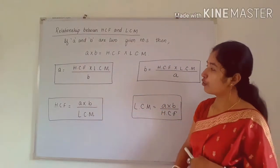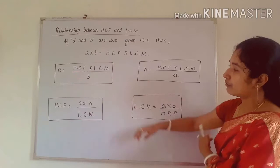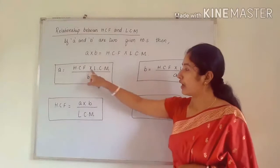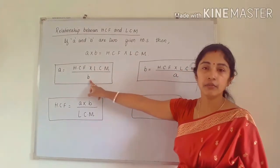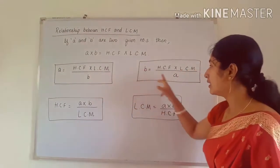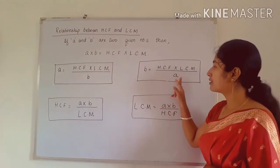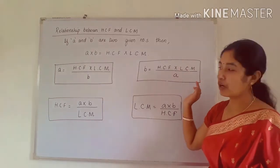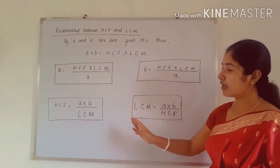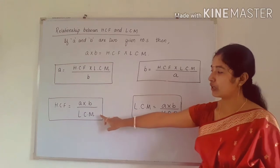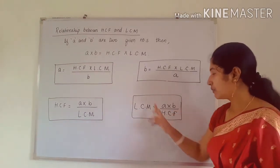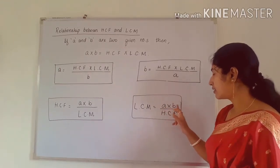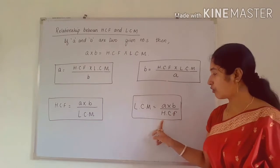These are the four formulas. In the first box, we find A if HCF, LCM, and the second number B are given. In the second, we find B if A, HCF, and LCM are given. In the third, if LCM and the two numbers are given, we find HCF. In the fourth, if two numbers and HCF are given, we find LCM.